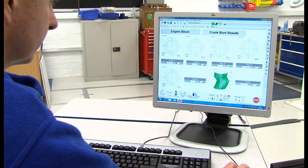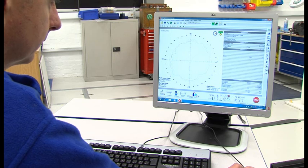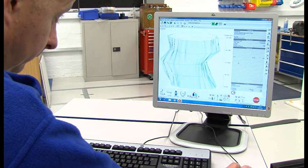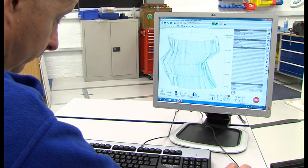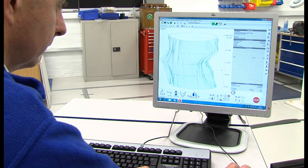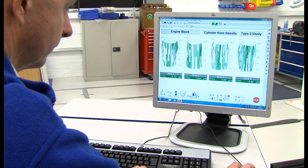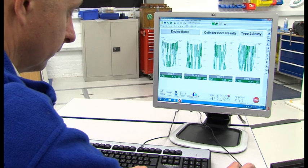Taylor Hobson's Ultra software provides the interface between the measuring instrument and the operator. Interactive graphical displays allow inspectors to visualise results in detail. Results are not just pass-fail criteria, but enable operators to gain a greater understanding of the manufacturing process.